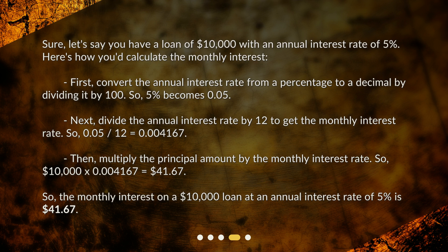Next, divide the annual interest rate by 12 to get the monthly interest rate. So 0.05 divided by 12 equals 0.004167. Then, multiply the principal amount by the monthly interest rate. So $10,000 × 0.004167 equals $41.67.